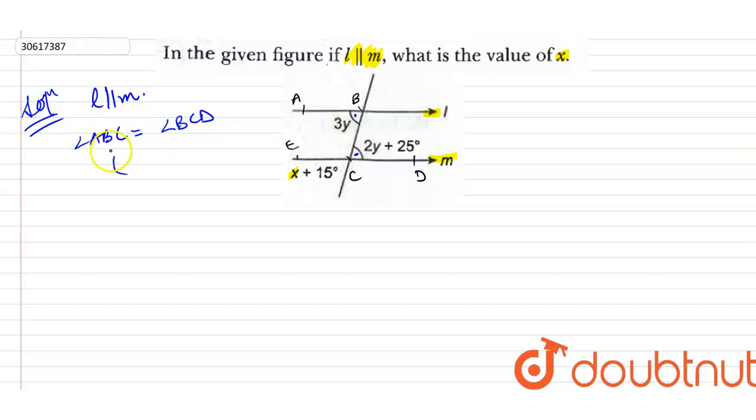They are forming alternate interior angles. And alternate interior angles formed by parallel lines are always equal.